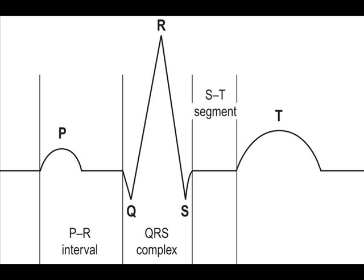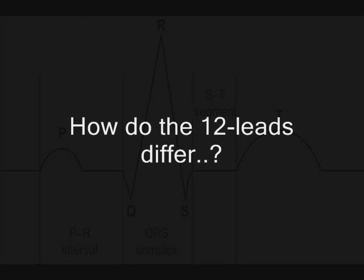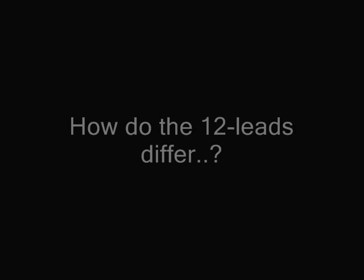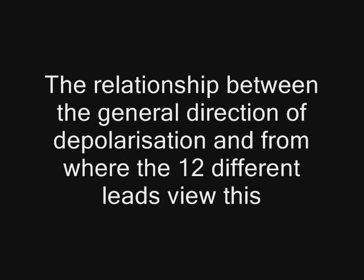This complex represents sinus rhythm, which we hope to see in our patients. But the question is, if the patient is in sinus rhythm, how do the leads differ on the 12-lead ECG? It's about the relationship between the general direction of depolarisation through the heart, and from where the 12 different leads view this. Do remember that when we refer to leads, this can mean two things: the electrodes we attach to the patient, but also the points from which the ECG is looking at the heart — and that's what we're referring to here, interpretation, not recording.